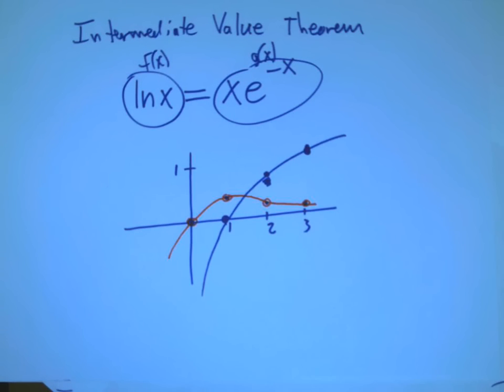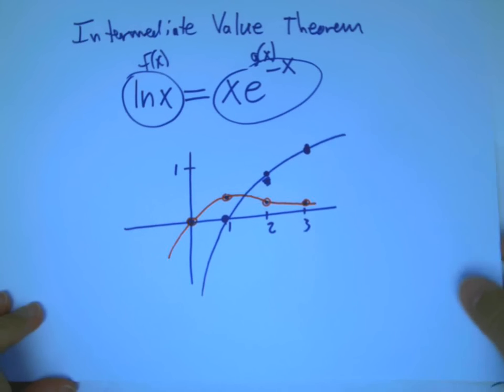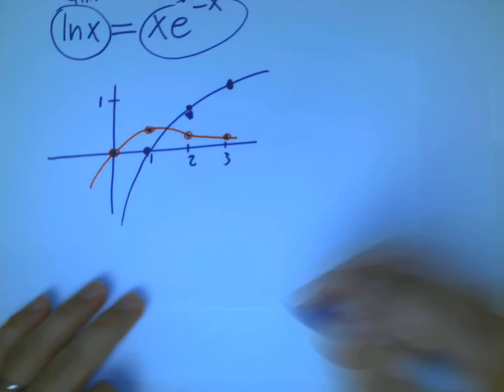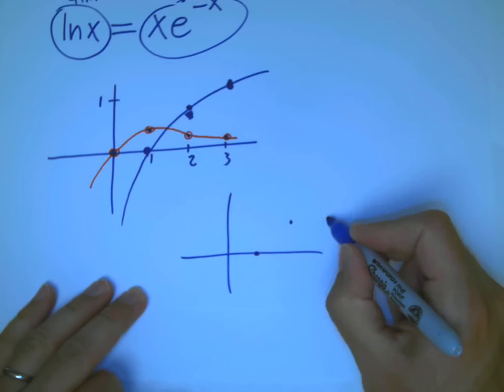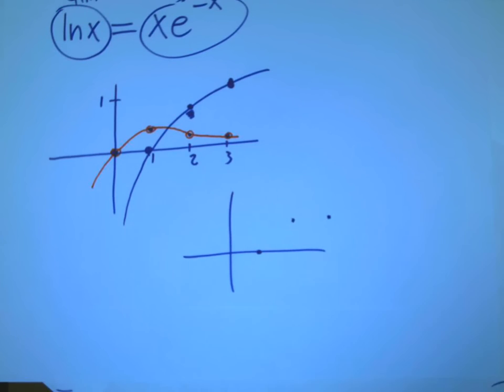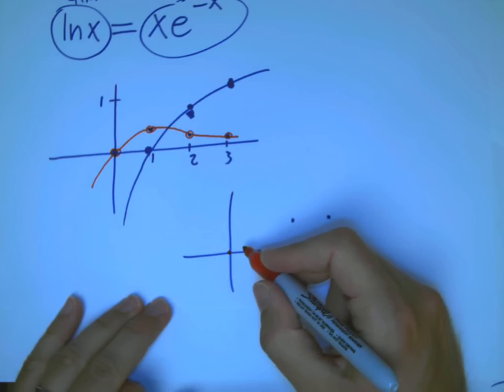But what did we use to conclude that they must cross? It's that they can't kind of hop over each other somehow. Now, what if, and I don't think this is going to be remotely plausible to you, and it shouldn't for good reasons, but what if the picture was more like this?